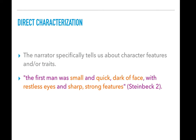Direct characterization is when the narrator specifically tells us about character features and or traits. 'The first man was small and quick, dark of face with restless eyes and sharp strong features.' In this description of George, words like small, quick, dark of face, restless eyes, and sharp strong features are directly telling us what George is like. Thus, it is direct characterization.